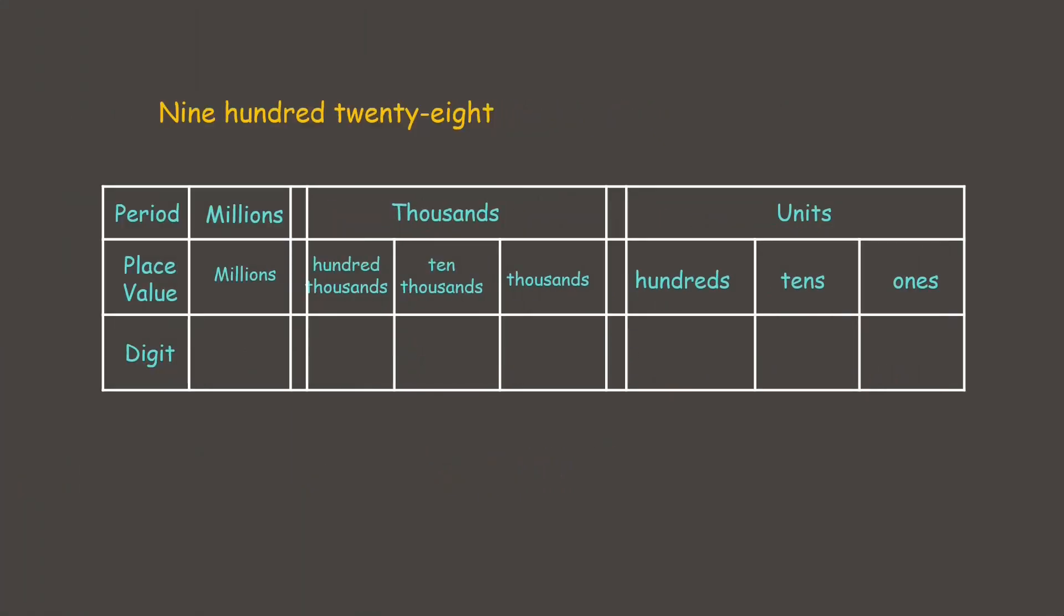Lastly we have this: 928,740. So again we have here under the thousands period, so we have 928. Separate it with the comma, and under the units period we have 740. Now that's how we write this number: 928,740.